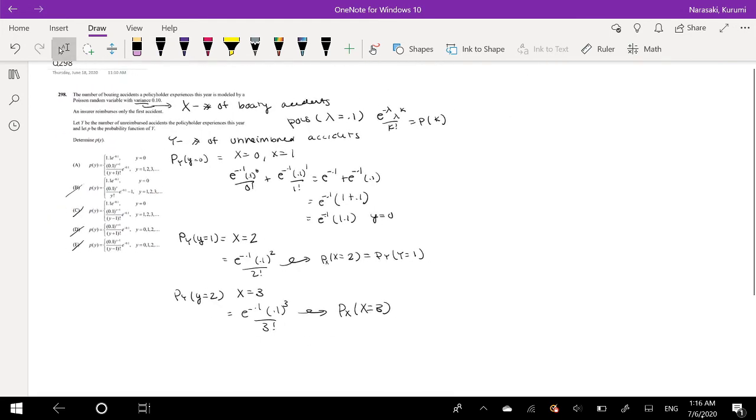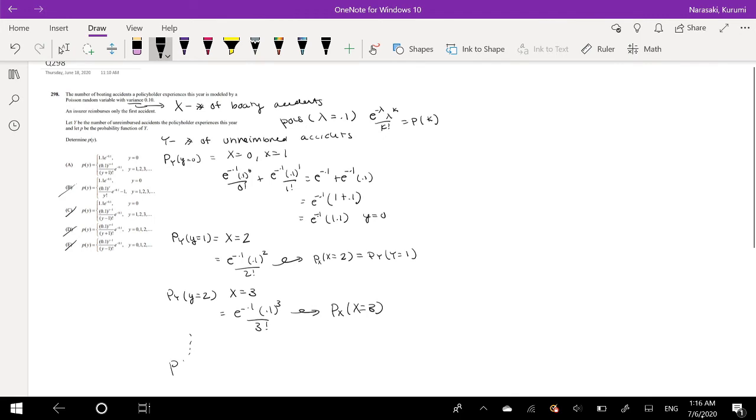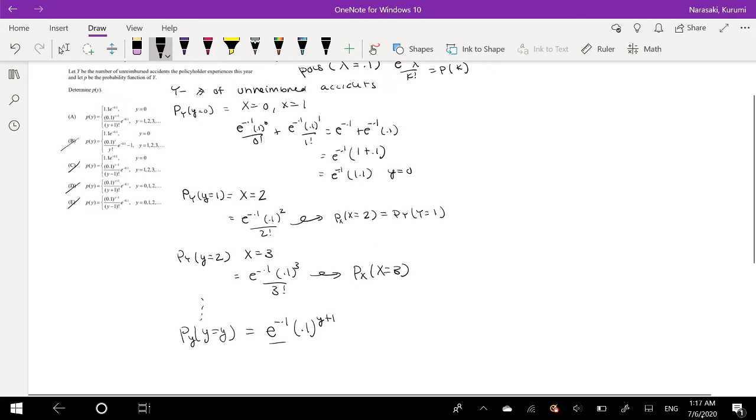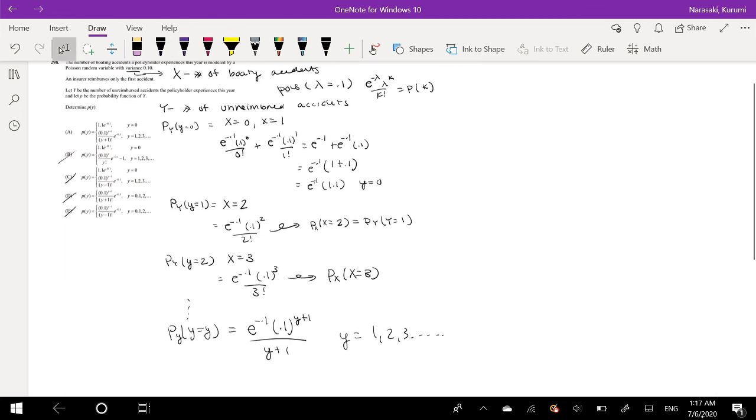So for example, for an arbitrary value, for an arbitrary y, what would it be? That's just equal to e to the negative 0.1, 0.1 to the, if this was 2, this value right here is just 2 plus 1, which is 3. So the same idea. It would just be y plus 1. And then what would be in the denominator? That's equal to 3, which is just this value, plus 1. So same thing, y plus 1. For the values y equals 1, 2, 3, and so on, for all integers, since Poisson is discrete.